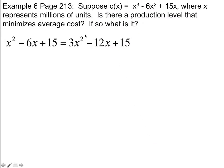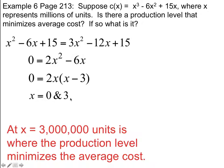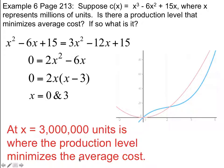Setting those two expressions equal and solving — bringing x² over to get 2x², bringing -6x over, and noting the 15s cancel — we get x = 0 units and x = 3 million units. Obviously x = 0 is trivial, but at 3 million units that production level minimizes the average cost.